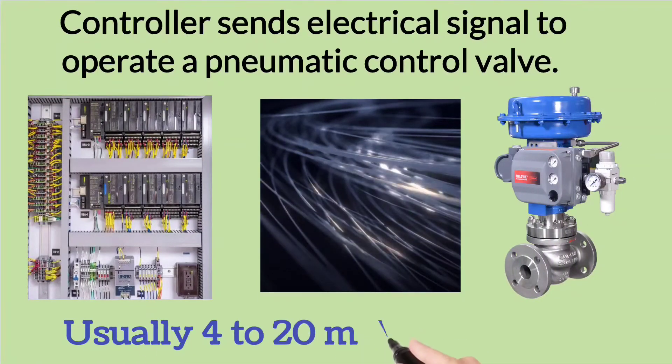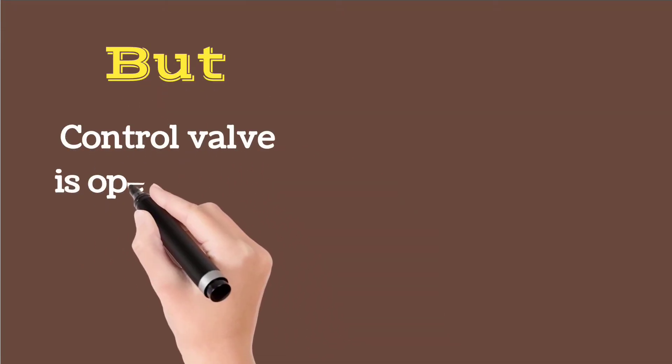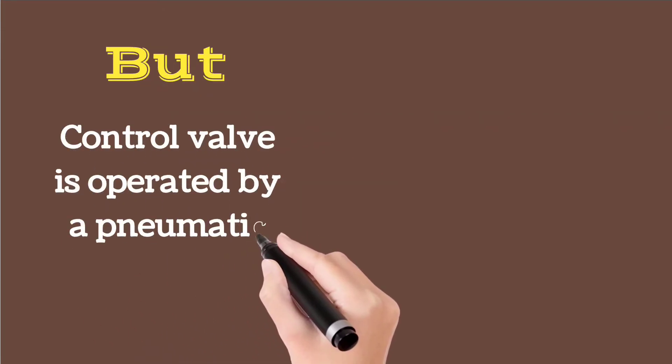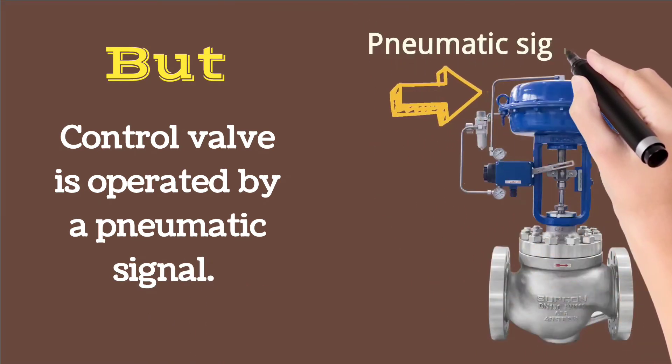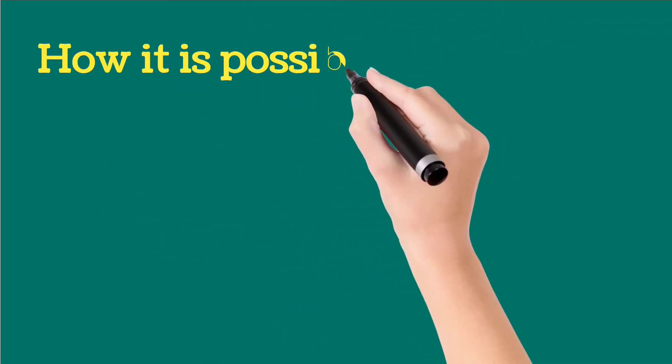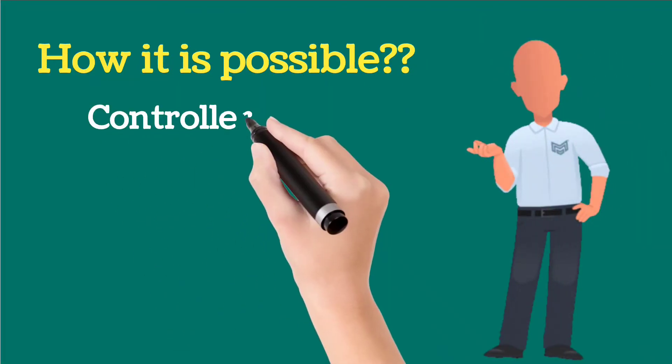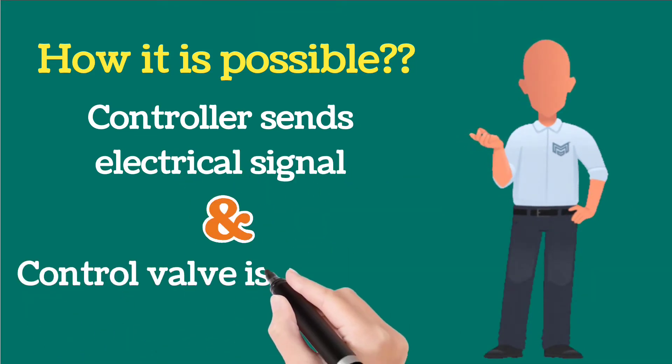Usually this signal is 4 to 20 milliamp signal. But here is a doubt. The control valve is operated by a pneumatic signal. The pneumatic signal provided to the control valve is shown by the arrow. How is it possible? Controller sends electrical signal and control valve is operated by pneumatic signal.